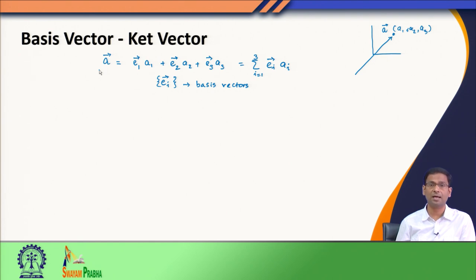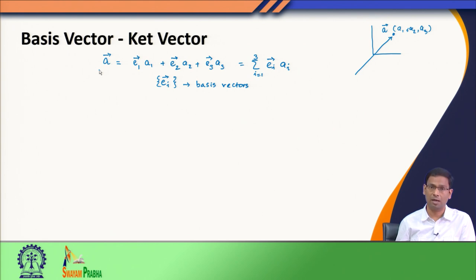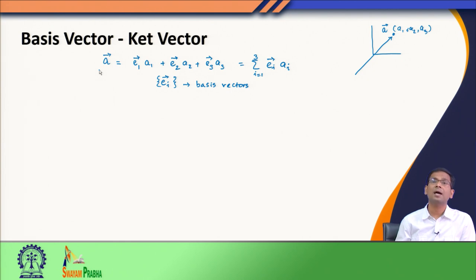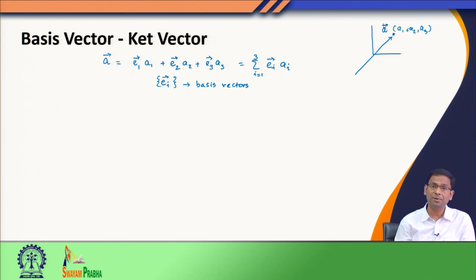The state of the system can be described as either one of these eigenfunctions or a linear combination of them, because these eigenfunctions form a complete set. So any arbitrary function can be expressed in terms of the eigenfunctions of the Hermitian operator. Therefore, in a quantum mechanical system I am dealing with some n-dimensional space, where the n dimensions are simply the n eigenfunctions. The state of the system can be expressed as a linear combination of these n eigenfunctions.